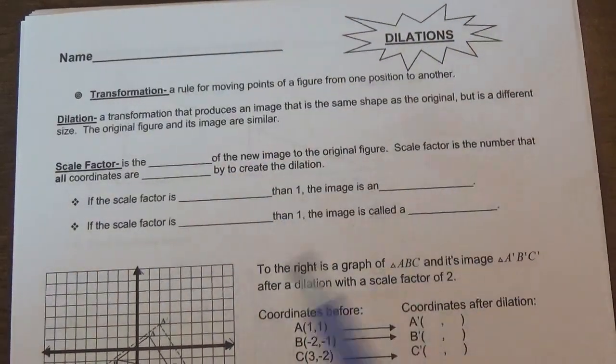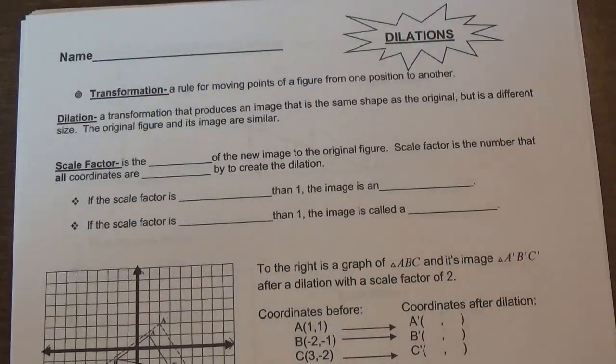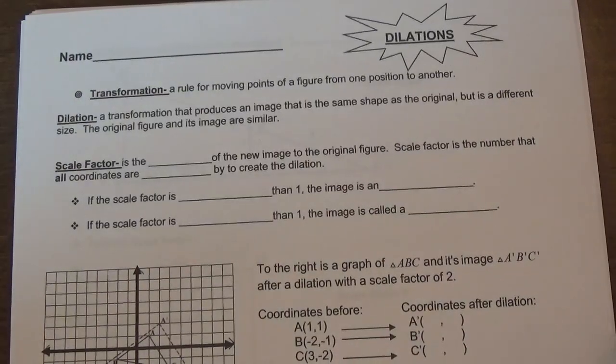The original figure and its image are similar but not congruent. So similar means it's proportional, but it's not the exact same size.